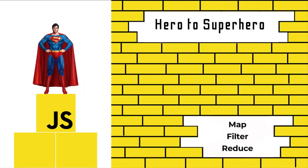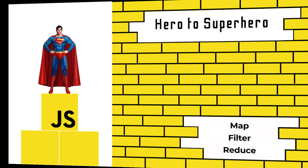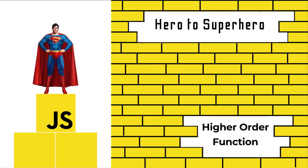Hi friends, welcome to the new series 'JavaScript Hero to Superhero', where I talk about advanced concepts in JavaScript. If you're a beginner trying to learn JavaScript, there is another series 'JavaScript Zero to Hero' where I have explained all the basic concepts. In this video I'm going to talk about some of the most used inbuilt higher order functions in JavaScript: map, filter, and reduce. If you are not familiar with higher order functions, you can see my previous video about higher order functions.